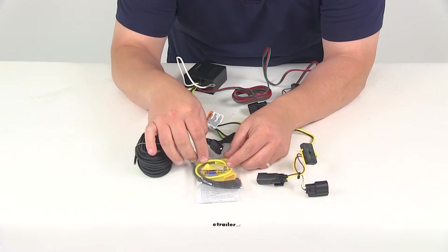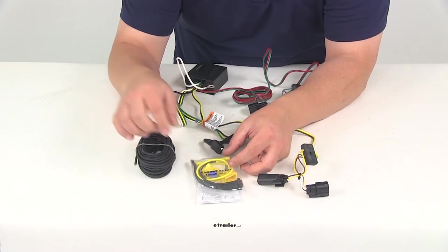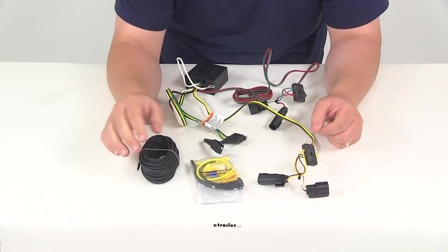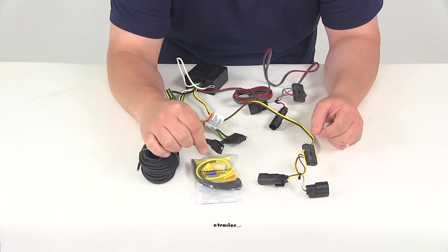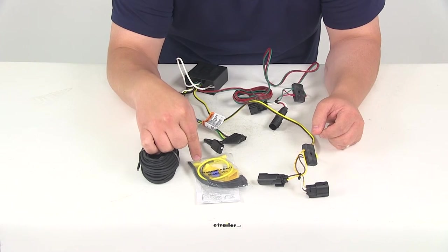So the fuse holder is going to get cut right in the middle and then one end of the fuse holder is going to connect to the black wiring using a buck connector. Again all the connectors are included. The other end of the fuse holder is going to get the ring terminal attached to it and that's going to connect to the positive post on the vehicle's battery.